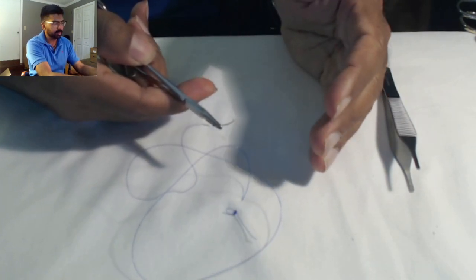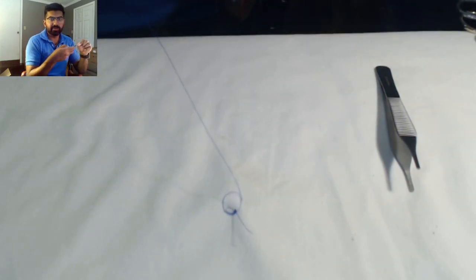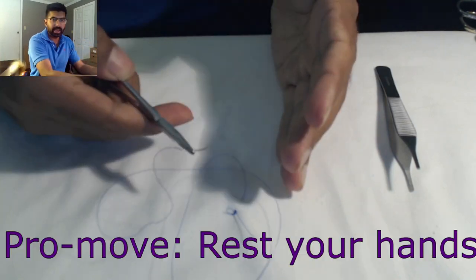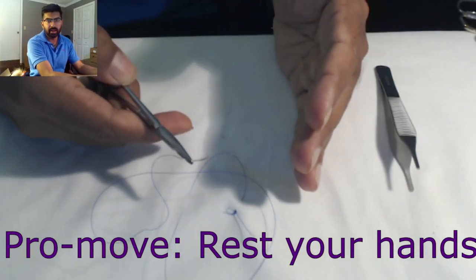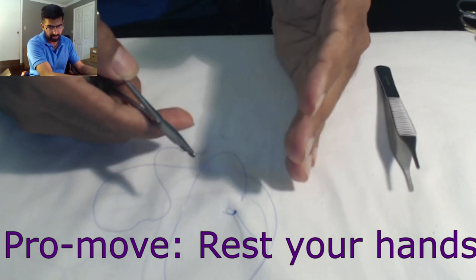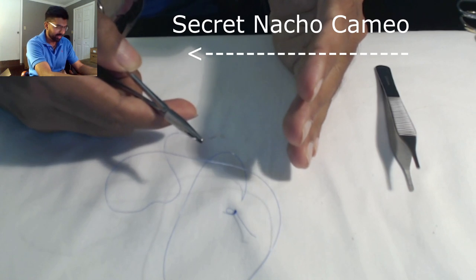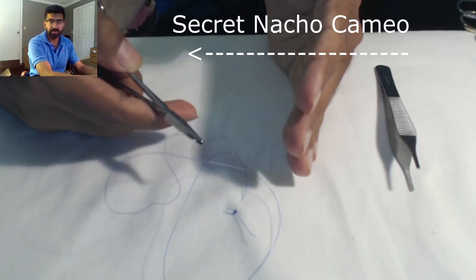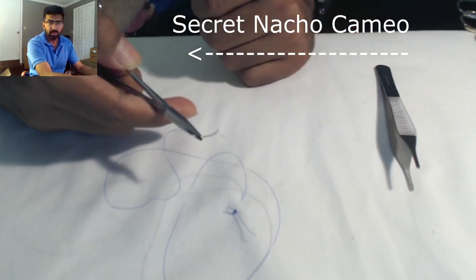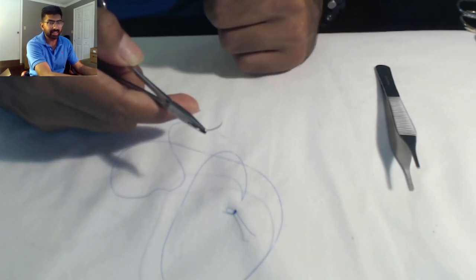The key thing most people don't talk about is that as I'm reloading, it's not floating in the middle of space. My hands are actually rested on either the patient, somebody else's hand, or the bed. This allows you to have a lot of stability as you reload the needle.